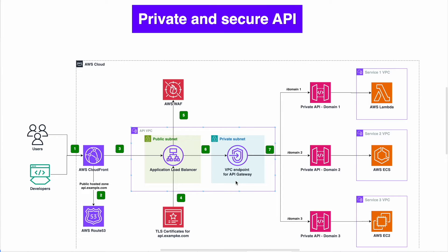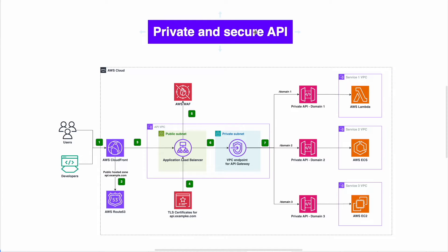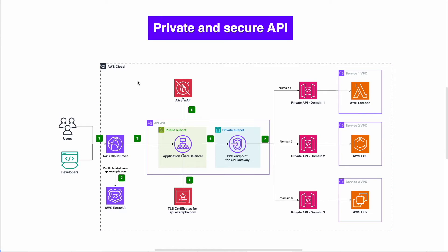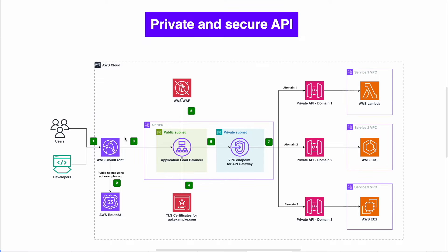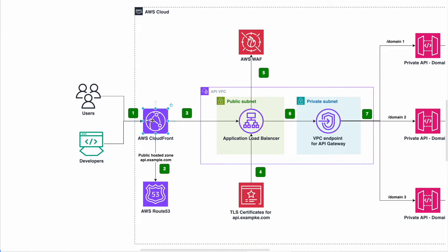Project number two is a private and secure API. This is a real project taken from the AWS blog. You'll learn how to build a truly private and secure API like big companies do — how to make it secure and private, and how to correctly use public subnets, private subnets, API Gateway private API. The solution starts with a user making a request through AWS CloudFront, which pulls the domain from AWS Route 53.